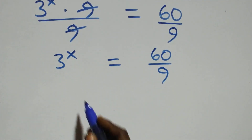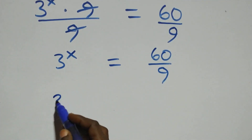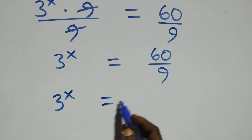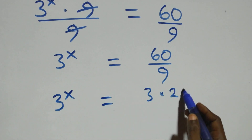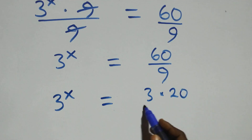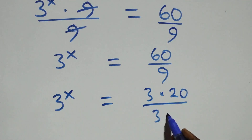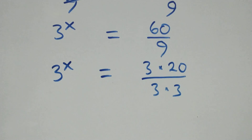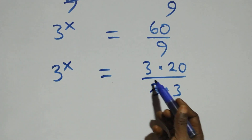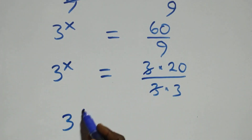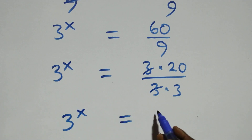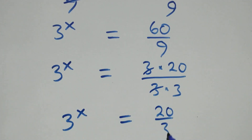We can write this as three raised to the power x equals three times twenty over three times three. The three cancels, giving us three raised to the power x equals twenty over three.